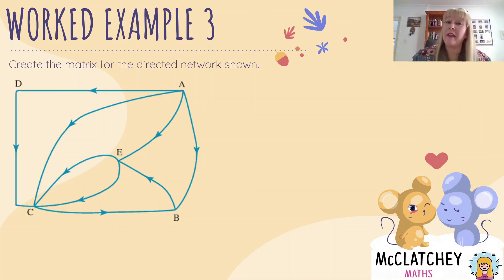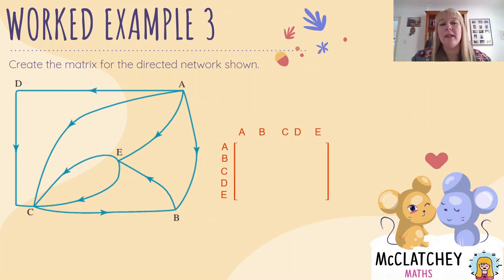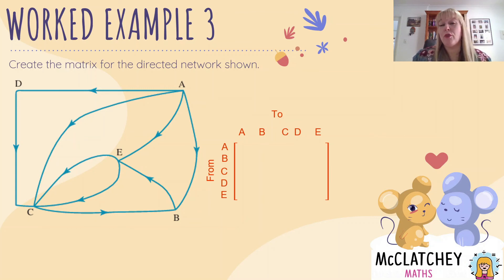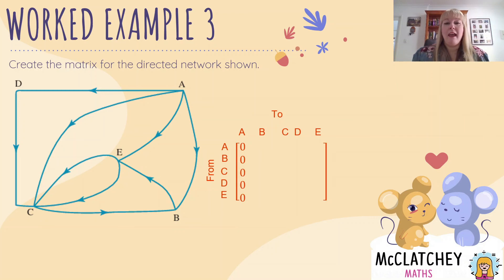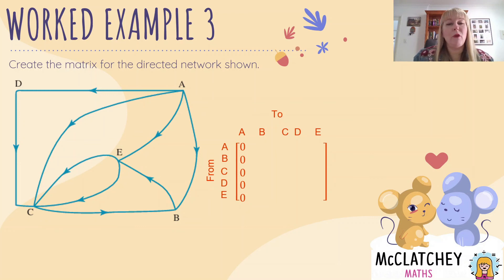Let's look at worked example three: create the matrix for the directed network shown. We've got five vertices — A, B, C, D, E — so it's going to be a five by five matrix. Now we're going to look at some subheadings. Because this is a directed network, it's really important to tell the reader where you're going from and where you're going to. So I've got 'from' on the left hand side and 'to' across the top. Let's firstly look at the flow going to A: A to A — there's no loop road, so that's a zero. Going from B to A — there's no direct way. From C to A — there's a road but it's a one-way street. D to A doesn't go back to A, and E to A doesn't go directly back to A either. So it's going to be all zeros for our first column.